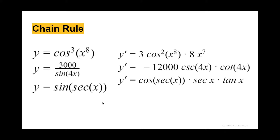For the first chain rule example, y equals cosine cubed of x raised to the eighth power. The derivative ends up being 3 cosine squared of x to the eighth times 8 times x to the seventh power. For the second one, y equals 3000 divided by sine of 4x, so the derivative equals 12,000 times cosecant of 4x times cotangent of 4x. For the third one, y equals sine of secant x, which ends up being cosine of secant x times secant x times tangent x.